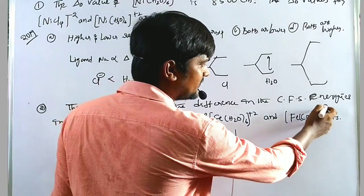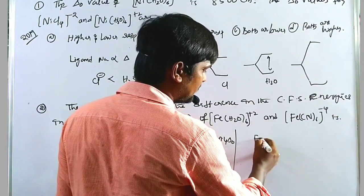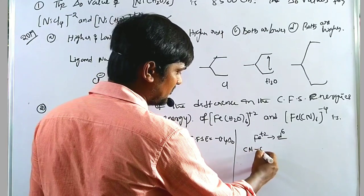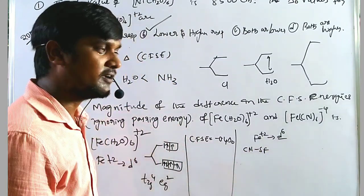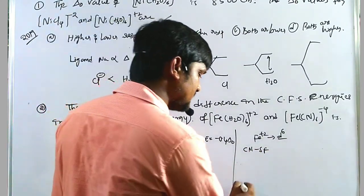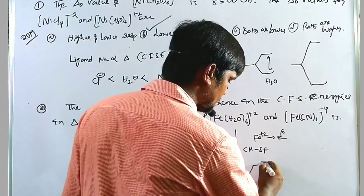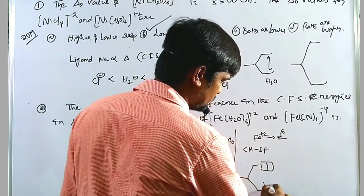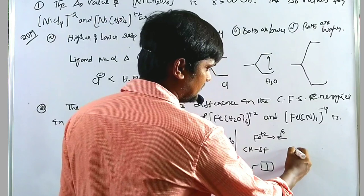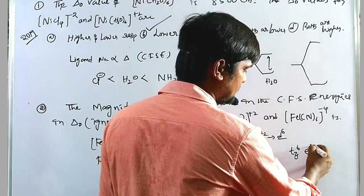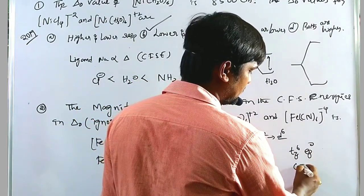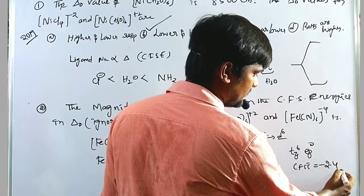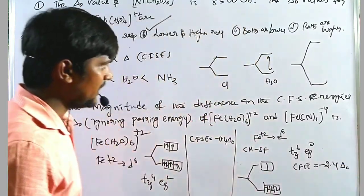For Fe(CN)₆⁴⁻, iron is again Fe²⁺ with d⁶ configuration. But cyanide is a strong field ligand, so pairing takes place. All 6 electrons fill into T₂g, giving T₂g⁶ eg⁰. The CFSE value is 6 × (−0.4) = minus 2.4 ΔO.